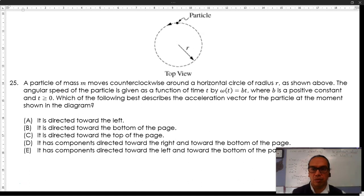The angular speed of the particle is given as a function of time t by omega of t is equal to bt, where b is a positive constant and t is greater than or equal to zero.